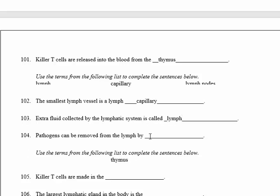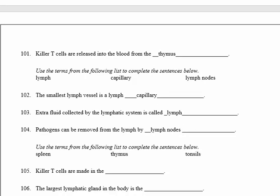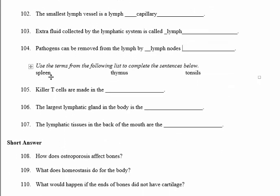Pathogens can be removed from the lymph by the lymph nodes. Number 105: the killer T cells are made in the thymus, which is an important lymph gland. Number 106: the largest lymphatic gland in the body is the spleen. Number 107: the lymphatic tissues in the back of the mouth are called the tonsils.